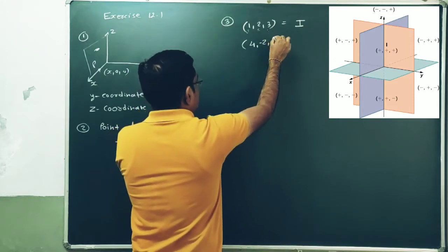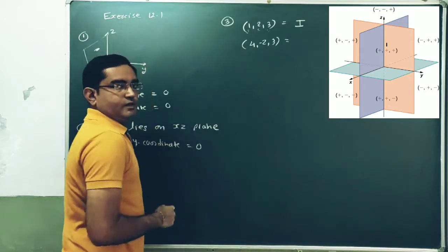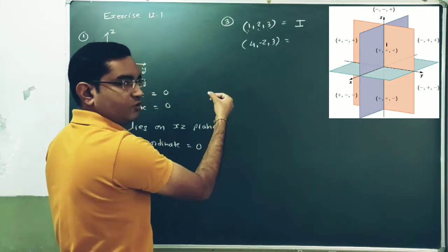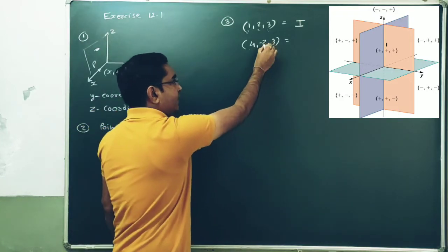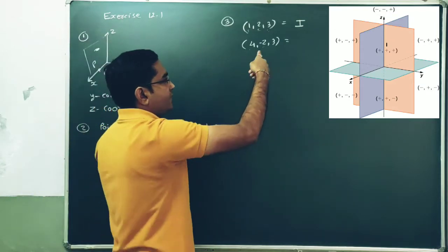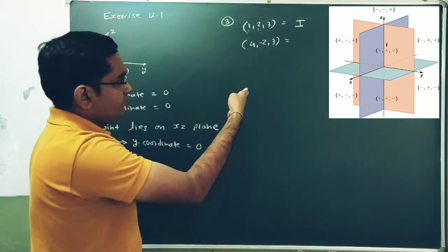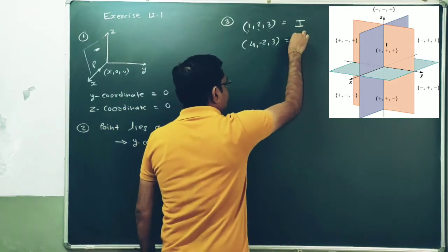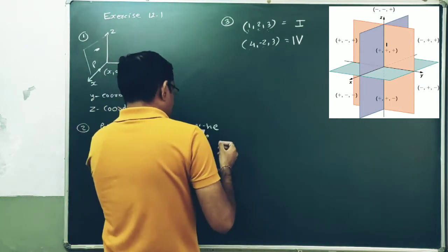Second point: (4, -2, 3). X coordinate is positive — front direction. In the front direction, octants 1, 4, 5, and 8 are there. Y coordinate is negative — left direction, so only two octants remain. Z is positive — upward direction. Front, left, and upward corresponds to the fourth octant. So the point (4, -2, 3) lies in the fourth octant.